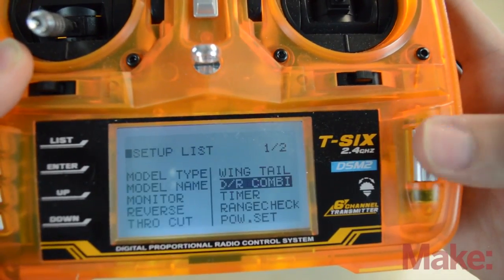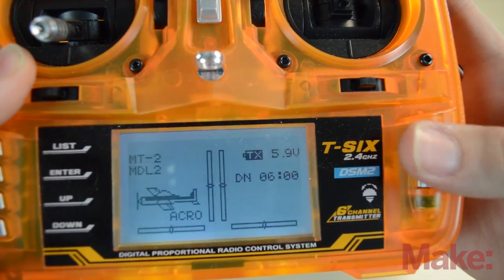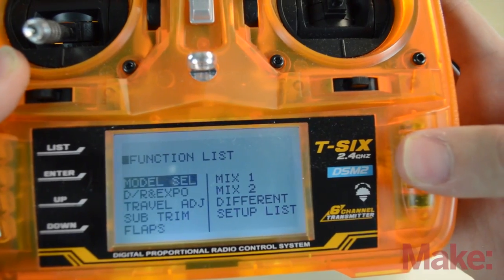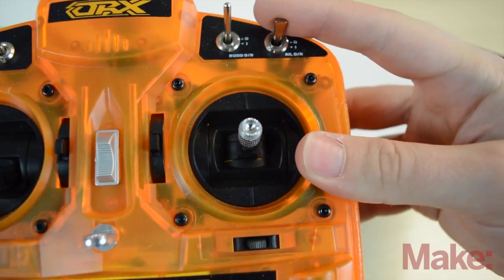So now when I go back to the list, dual rates, and I flip this switch up on the top, now you can see that they all changed back to 100 percent.